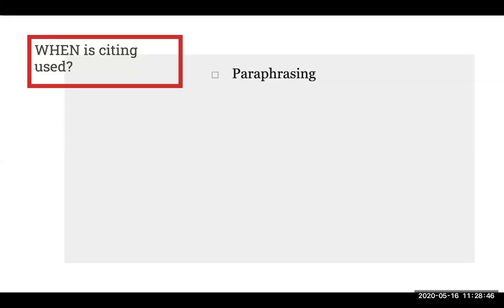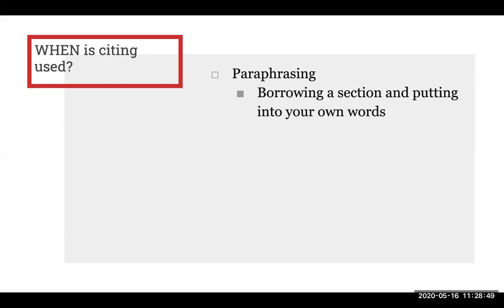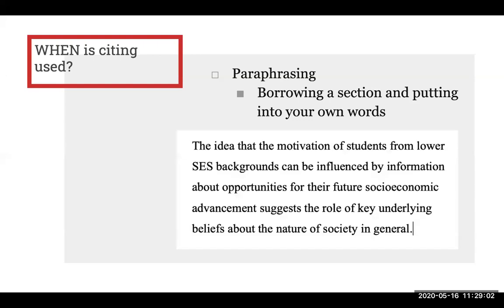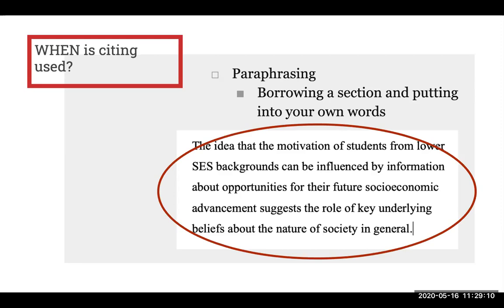Citations should also be used when you are paraphrasing. Paraphrasing is when you take someone else's work and put it into your own words. Even though you aren't quoting something word for word, it is still borrowing someone else's idea. Let's say you want to borrow a whole paragraph and rewrite it into your own words. Even though you aren't quoting something word for word, it is still borrowing someone else's idea. Paraphrasing requires citing the source of where you borrowed the idea from.